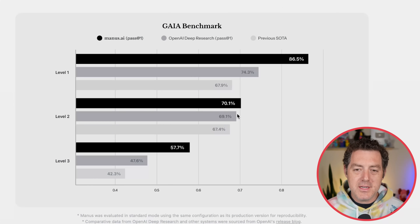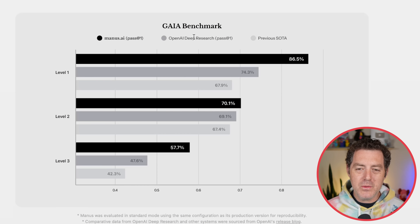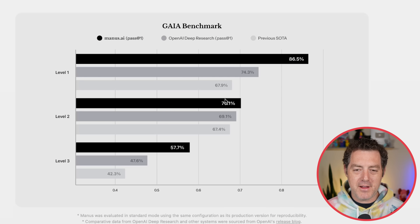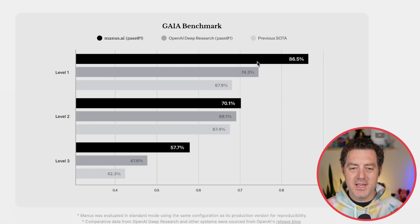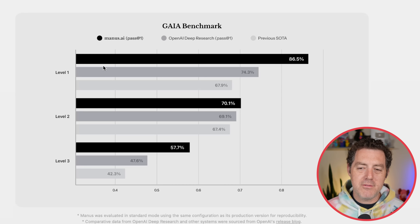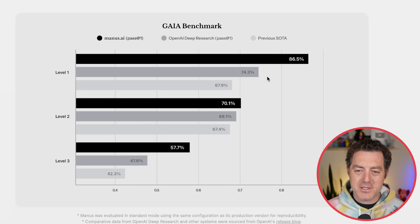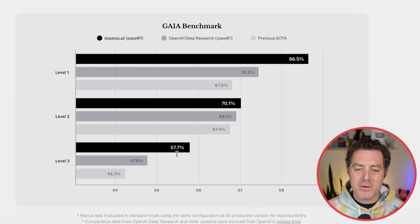It does have a benchmark — the Gaia benchmark — and it's only comparing against deep research, which I found interesting. We have level one, level two, and level three. In all three, Manus at level one scored well above deep research; level two, about even; and level three, well above deep research.